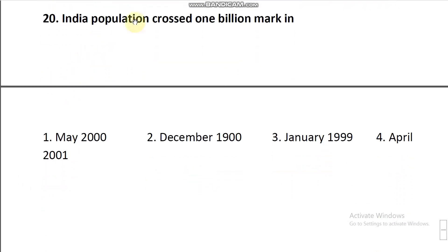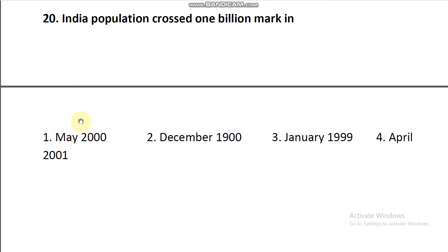Last question, question number 20: India's population crossed the 1 billion mark in which year? As per the census report, in the year May 2000, India crossed the 1 billion mark.